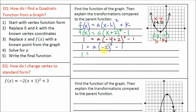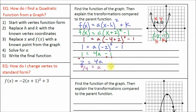Next, solve the exponent: negative 2 squared is positive 4, so we have 1 equals 4a minus 1. To get a by itself, add 1 to both sides. 1 plus 1 is 2, equals 4a. Then divide both sides by 4: 2 over 4 equals a, which simplifies to 1 half. So a equals one half.